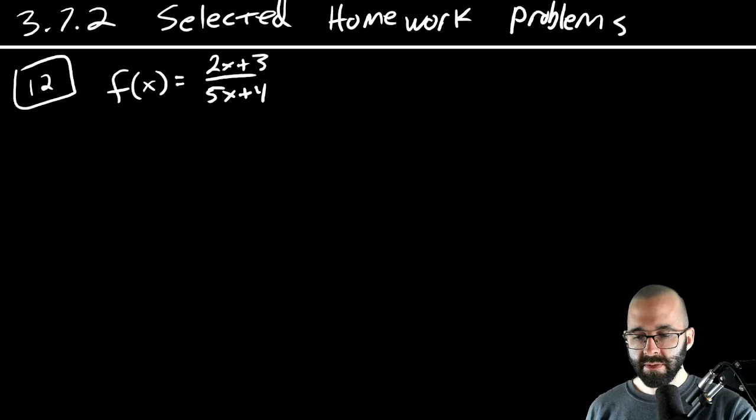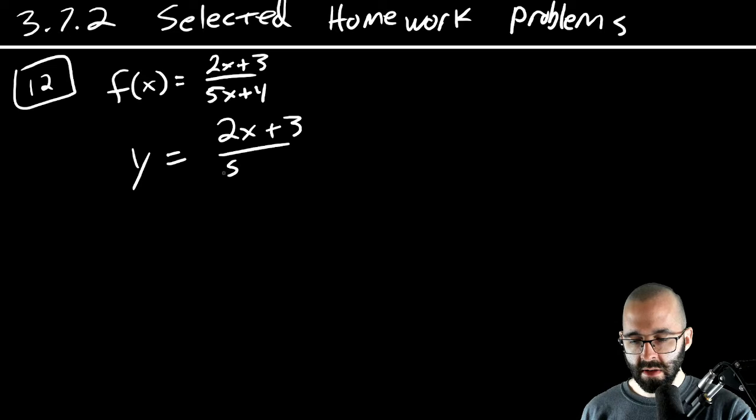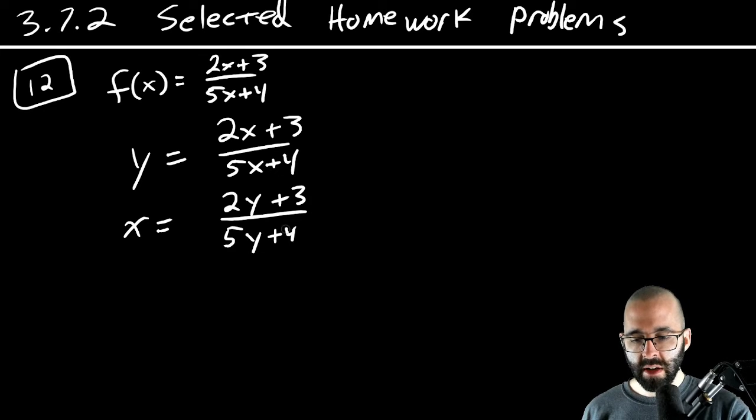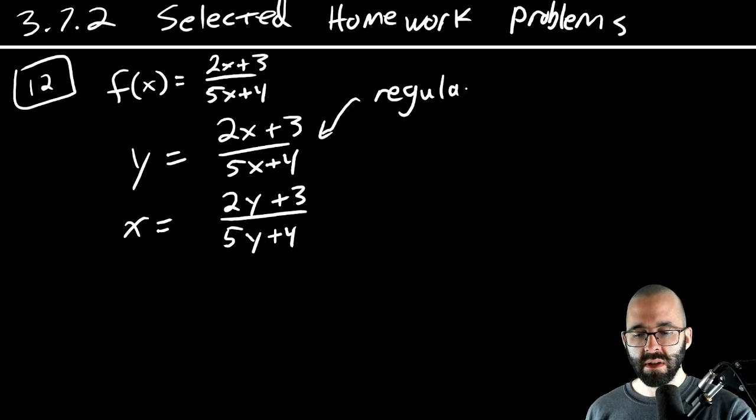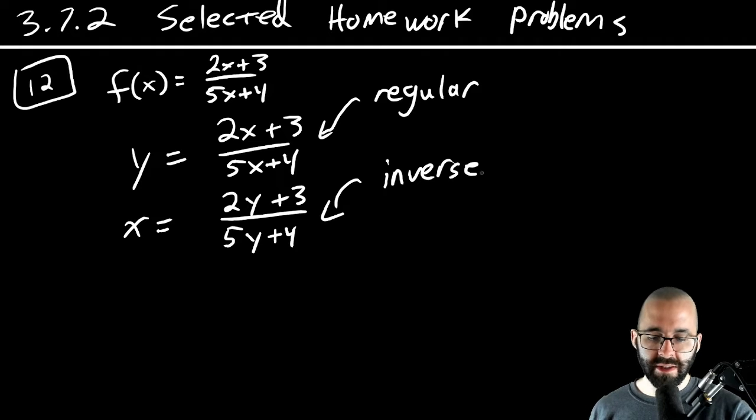So to find the inverse function, we're going to write this in Y's and X's. Then we're going to switch all the X's and all the Y's. That's how we find our inverse function. This is for the regular, the original, and this is for the inverse, the different X's and Y's.